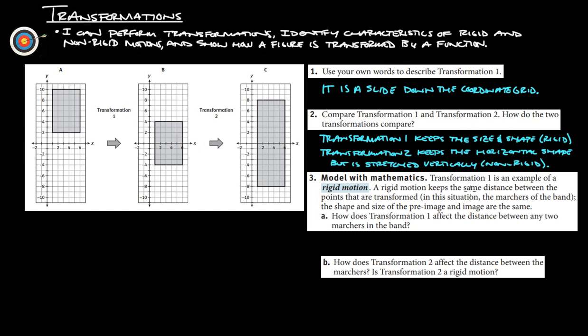Three, model with mathematics. Transformation one is an example of rigid motion, which we just talked about. Rigid motion keeps the same distance between the points and are transformed in this situation, the marchers of the band. The shape and size of the pre-image and the image are the same. How does transformation one affect the distance between any two marchers in the band? So it doesn't affect it at all. It stays the same. So basically just stays the same.